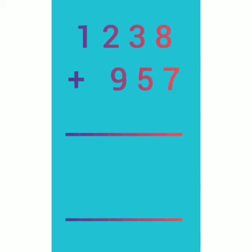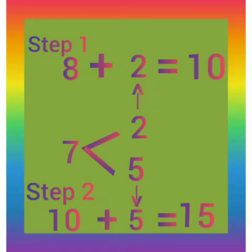In one's place, 8 and 7 are there. You have to add 8 and 7 together. From 8 and 7, which is bigger? 8 is bigger. So you have to make 8 as 10 by getting 2 from 7. If you take away 2 from 7, then remaining value is 5. Now we have to add 8 and 2 together to make 10. 8 plus 2 makes 10.